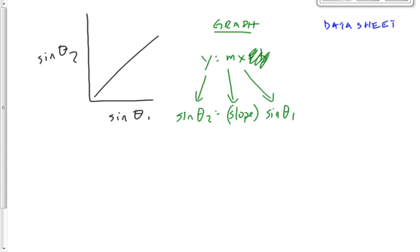Now what you want to do is come up with an equation from your data sheet that has the same variables as this one. What equation on my data sheet has sine theta 2 and sine theta 1 in it? Snell's law, right? So we're gonna say sine theta 1 over sine theta 2 equals v1 over v2 equals lambda 1 over lambda 2 equals n2 over n1. We only ever use two parts of that equation.